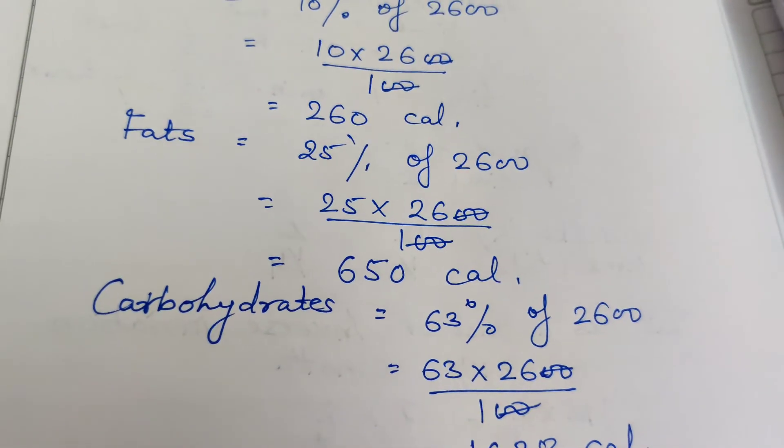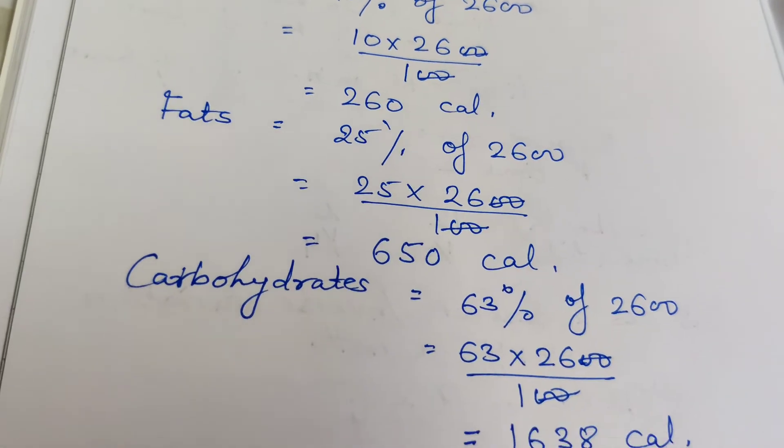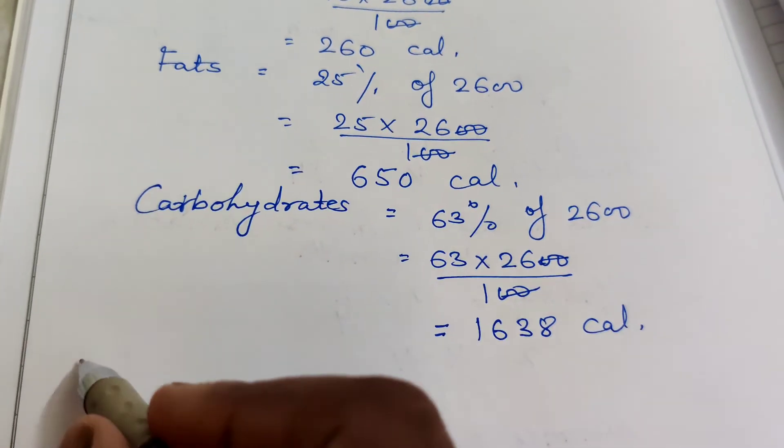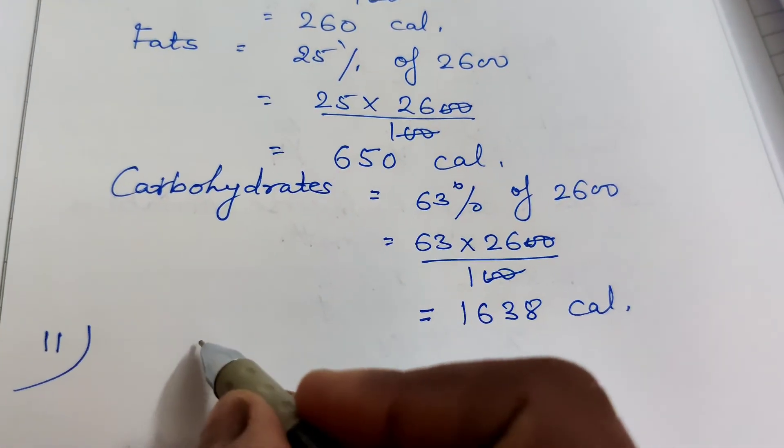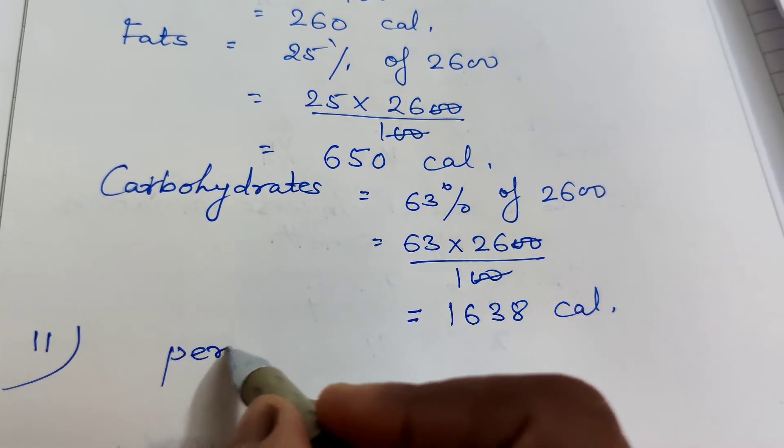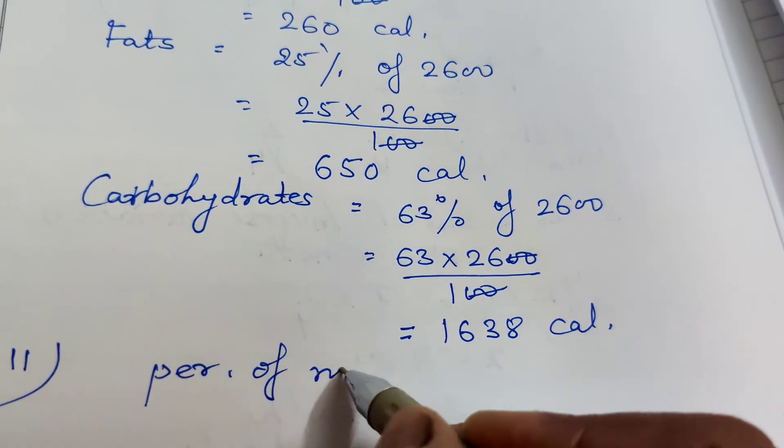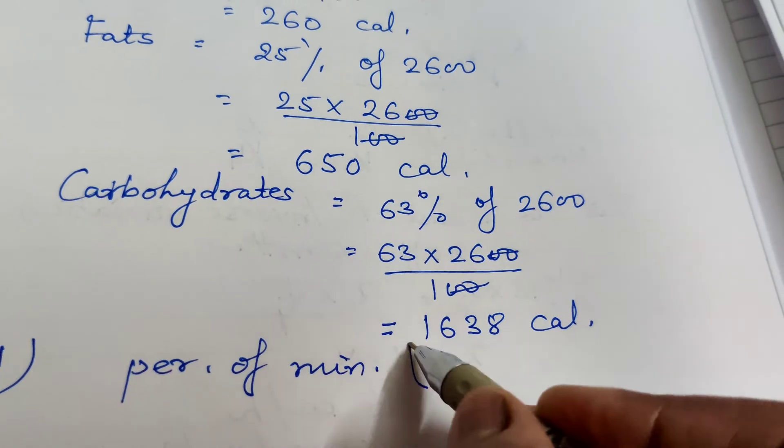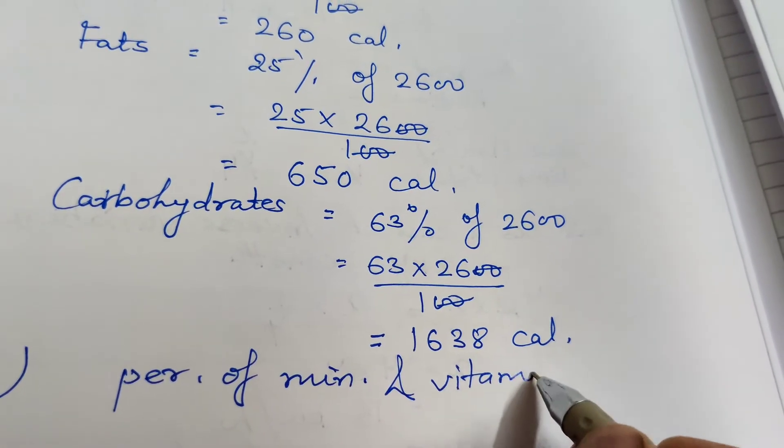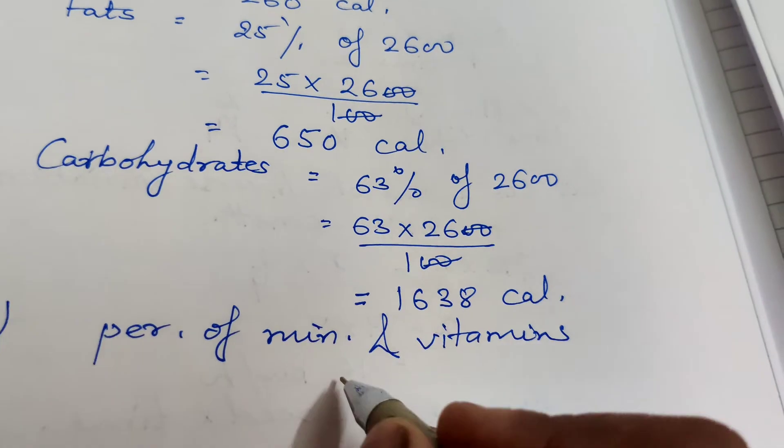Now second question is: find the amount of minerals and vitamins. Percentage of minerals and vitamins is equal to 100 minus (10 plus 25 plus 63), which equals 2%.